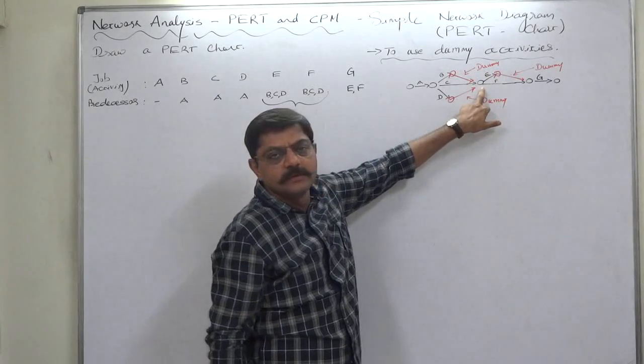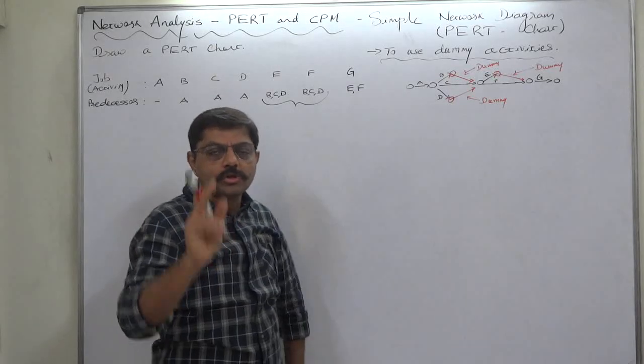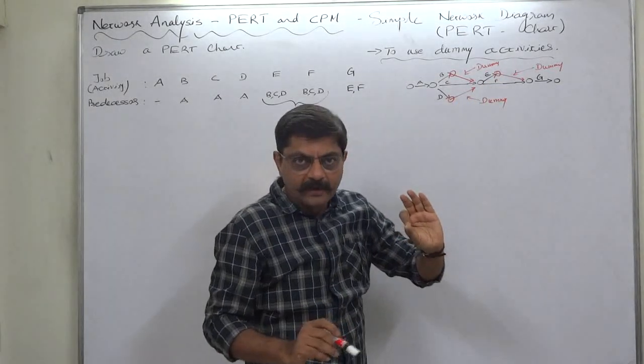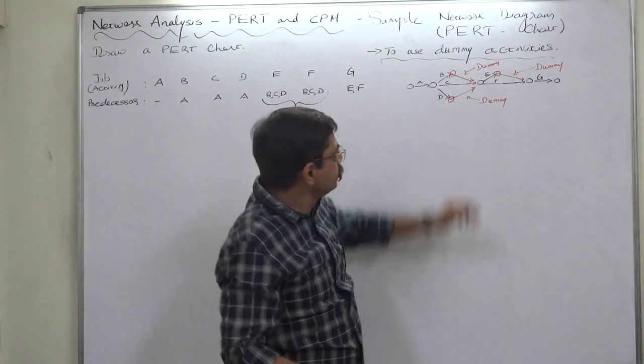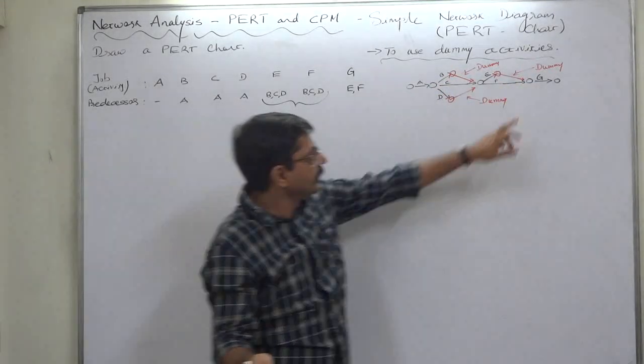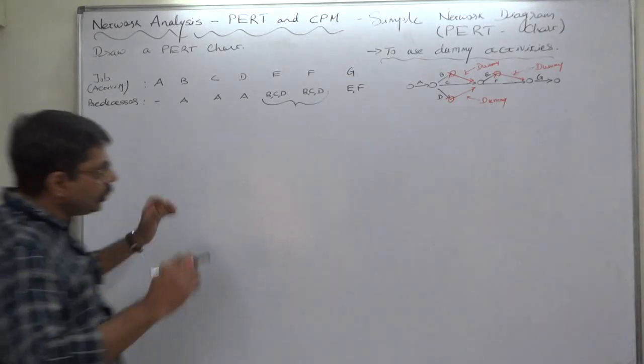Similarly, E and F are also common predecessors of G, again in the same situation because E and F have this common starting point and common end point. So we have to show one of them with the help of dummy only. I preferred showing E with dummy. You can also prefer showing F with dummy, it is upon you.